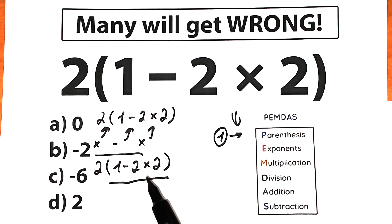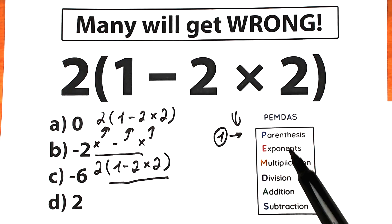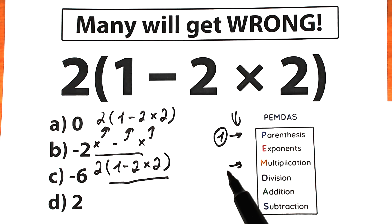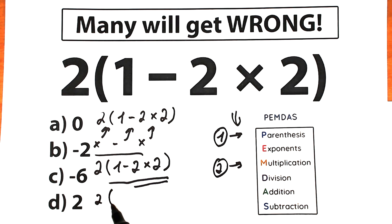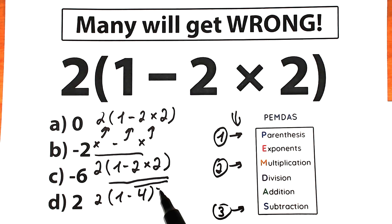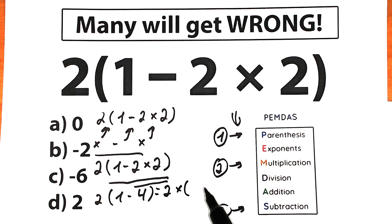What should we do first — subtract or multiply? As I said, PEMDAS works from top to bottom, meaning higher position means higher priority. Multiplication has a higher position than subtraction, so multiplication has higher priority. Our second step is multiplication: we multiply 2 times 2. So inside the parentheses we now have 1 minus 4, which equals minus 3. Our third step is the subtraction inside the parentheses: 1 minus 4 equals minus 3.